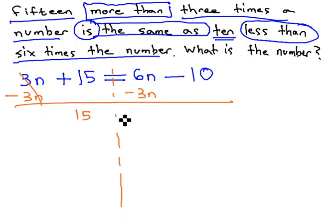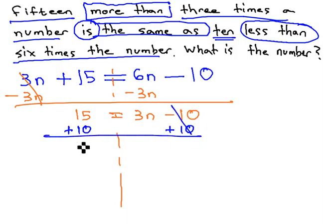This gives us 15 equals 3n minus 10. It is now a two-step equation, as we move the numbers away from the n by adding first 10 to get rid of the 10 negatives, giving us 25 equals 3n.